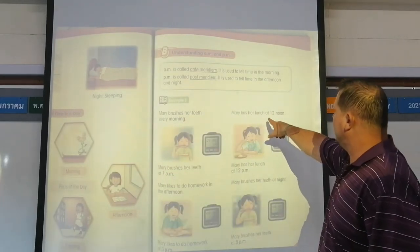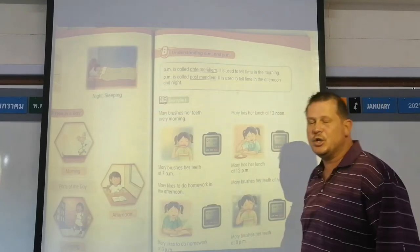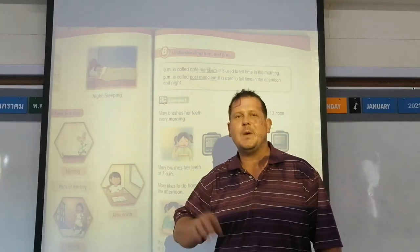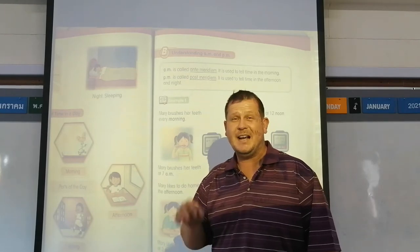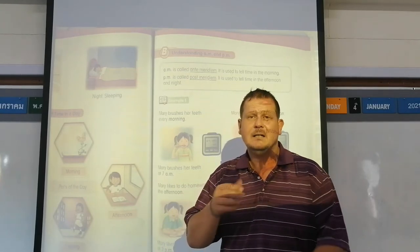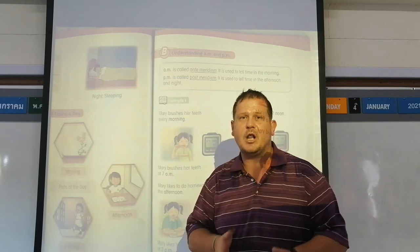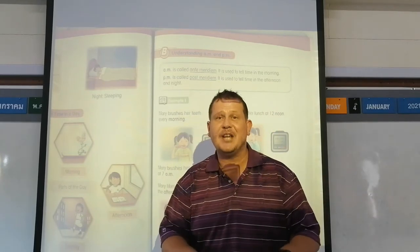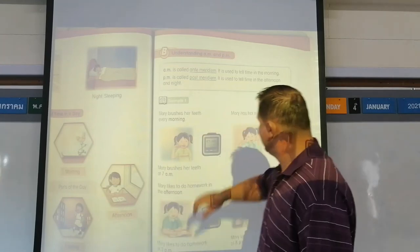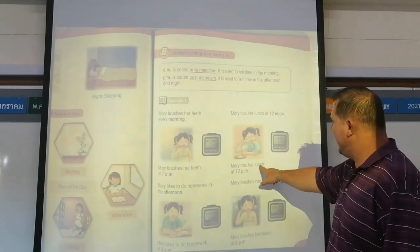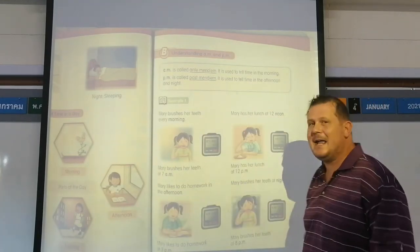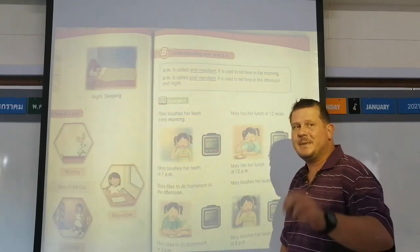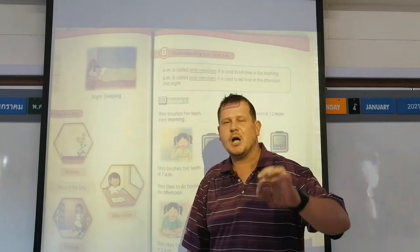Mary has lunch at 12 noon. 12 noon means 12 o'clock in the afternoon, because noon has the same meaning as 12 o'clock in the afternoon — like when you have lunch at school, you have lunch at noon. Now it's past 12 in the afternoon, so it becomes PM — Past Midday.